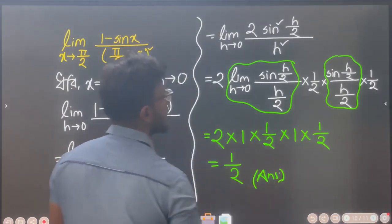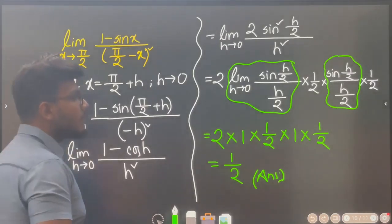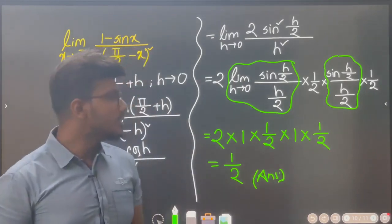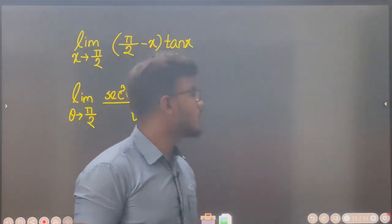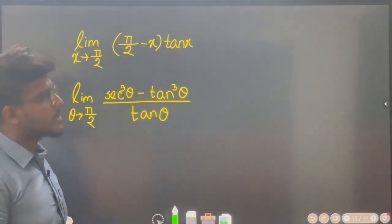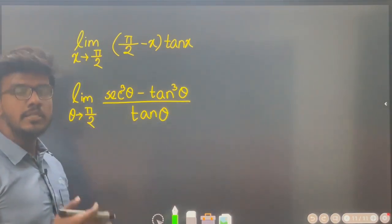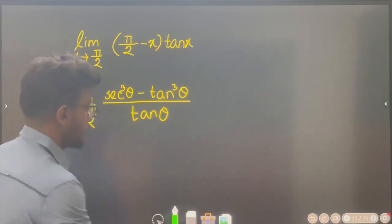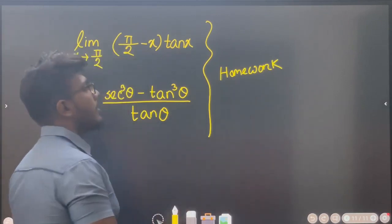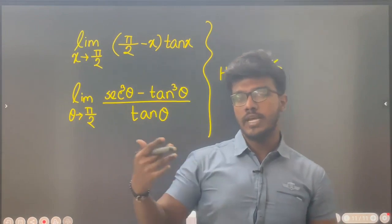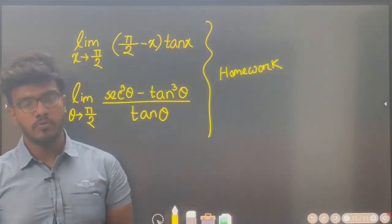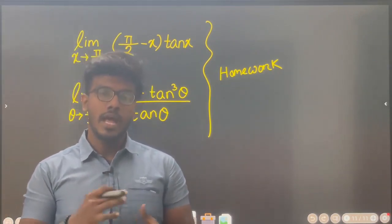The answer will be one half. We have to do this with our own process — we don't use L'Hôpital's rule, we use the substitution method. x equal to pi by 2 plus h, so h tends to 0. The key formula used is limit x tends to 0 of sin x by x equals 1. Please try this homework and let us know your answers in the comments section.